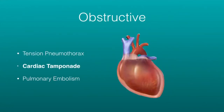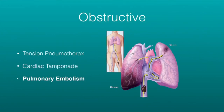With cardiac tamponade, you have a fluid buildup between the pericardial sac surrounding the heart and the myocardium. As the sac fills with fluid — oftentimes blood due to penetrating trauma — it no longer allows the heart to expand and the heart can't pump out the blood. You'll see this with muffled heart tones and a narrowed pulse pressure.